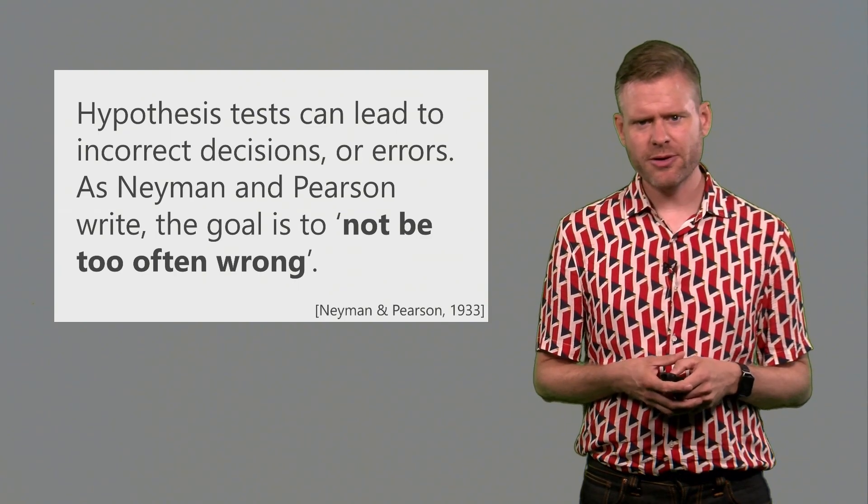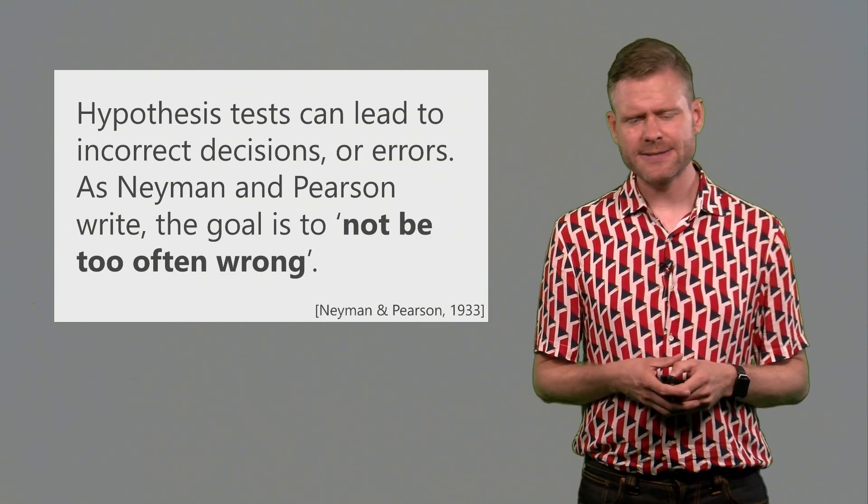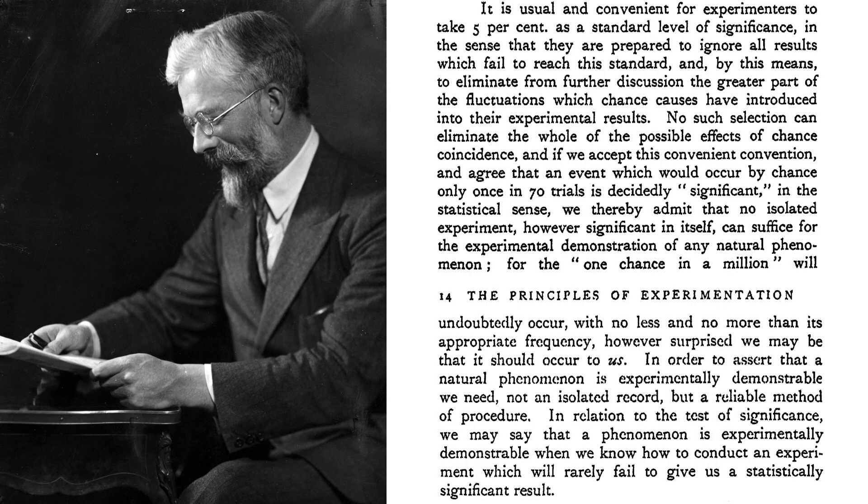Let's take a look at one specific page from the book by Fisher on how to design experiments. Here he writes, It is usual and convenient for experimenters to take 5% as a standard level of significance, in the sense that they are prepared to ignore all results which fail to reach this standard, and by this means to eliminate from further discussion the greater part of the fluctuations which chance causes have introduced into their experimental results. No such selection can eliminate the whole of the possible effects of chance coincidence. And if we accept this convenient convention, with which he means the convenient convention to set the alpha level at 5%, something we'll return to in later modules.